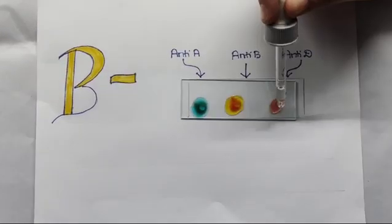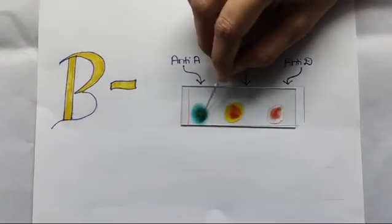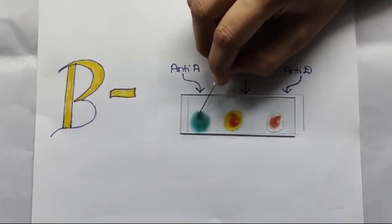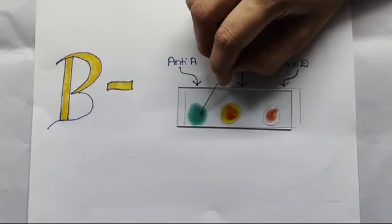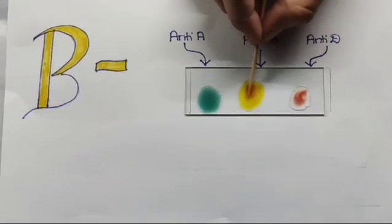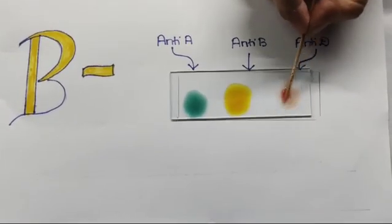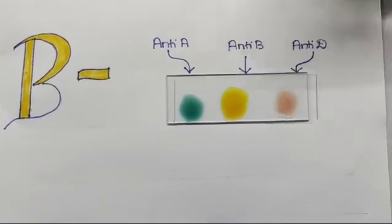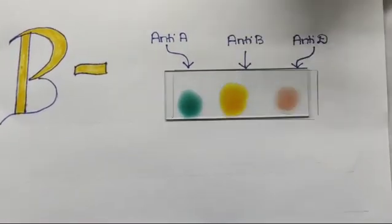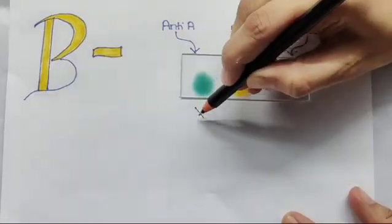Similarly, no clotting is seen in anti-D, which means antigen D is absent. It is a negative blood group. Thus, the blood group determined is B negative.